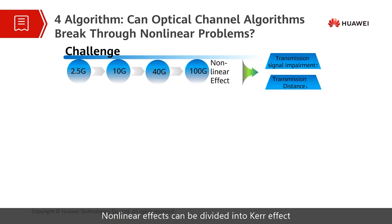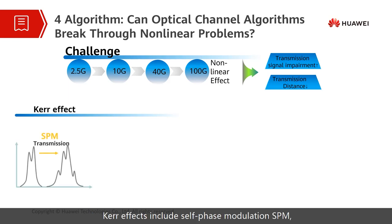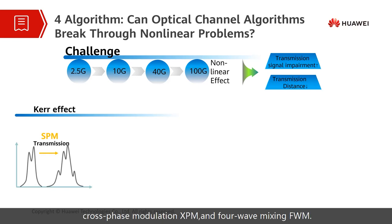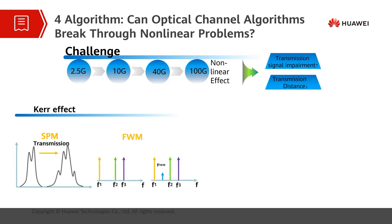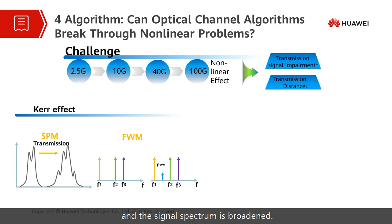Non-linear effects can be divided into Kerr effects related to light intensity and stimulated scattering related to energy transfer. Kerr effects include self-phase modulation (SPM), cross-phase modulation (XPM), and four-wavelength mixing (FWM). Self-phase modulation: the refractive index of the transmission medium changes with the light intensity, causing the phase of the incident light to change and the signal spectrum to broaden.